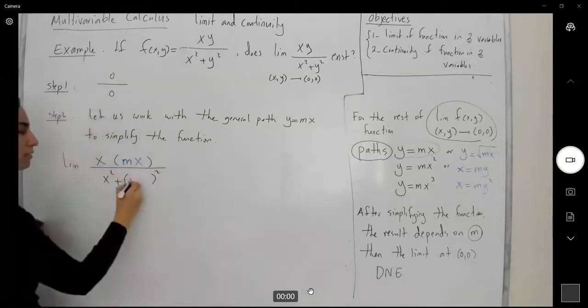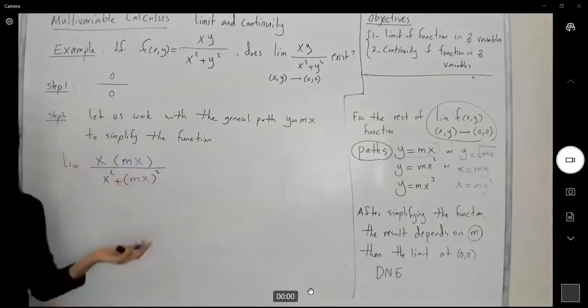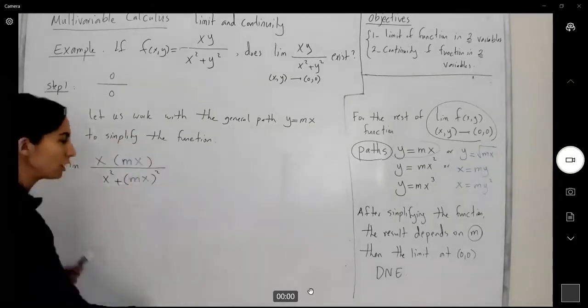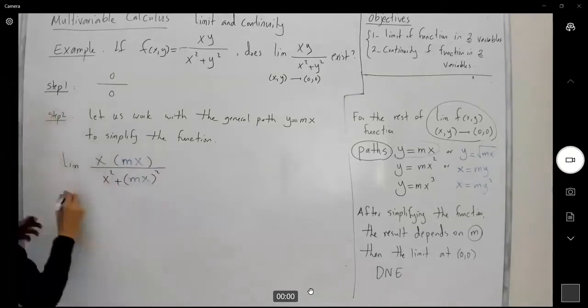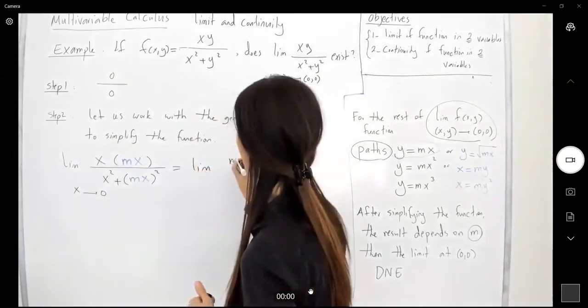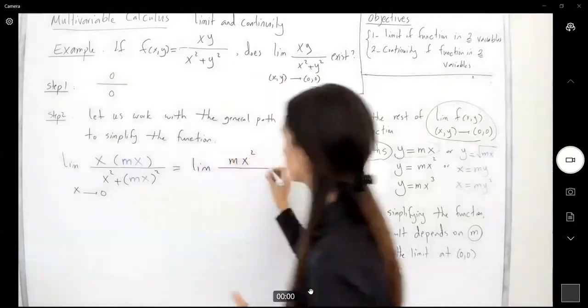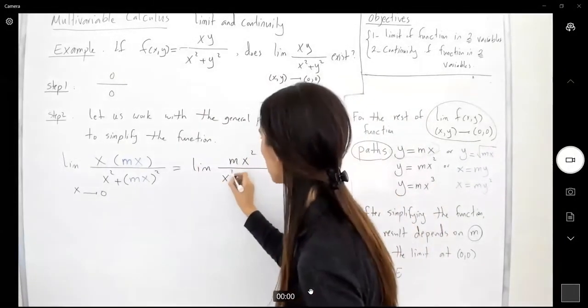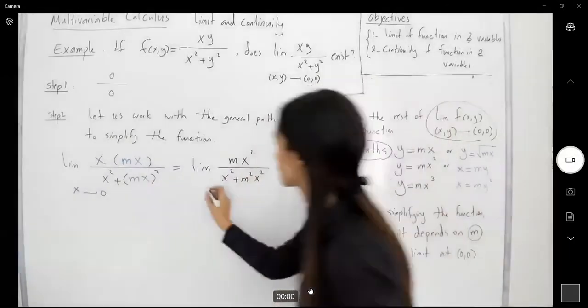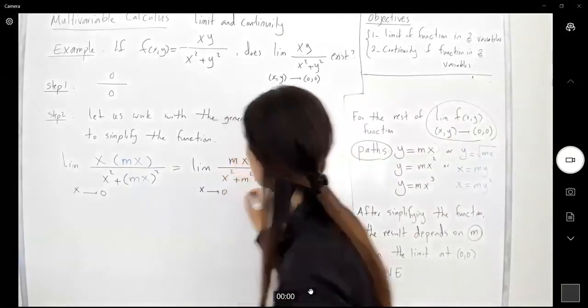And note that you don't have any y left. There is no y in this new function. It only depends on x. Where does x go? x goes to zero. So here you have the limit of mx squared divided by x squared plus m squared x squared, as x goes to zero.